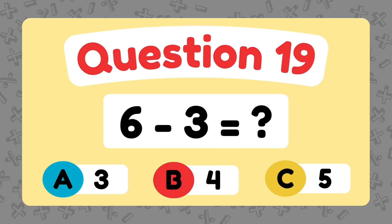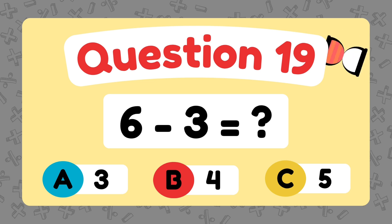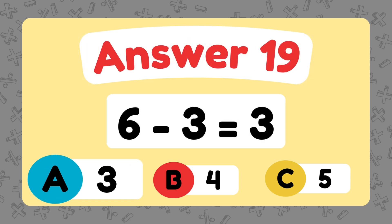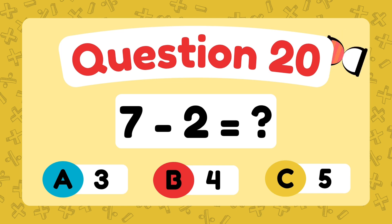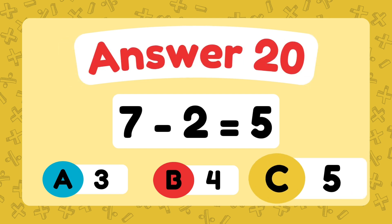What is 9 minus 2? The answer is 3. What is 7 minus 2? The answer is 5.